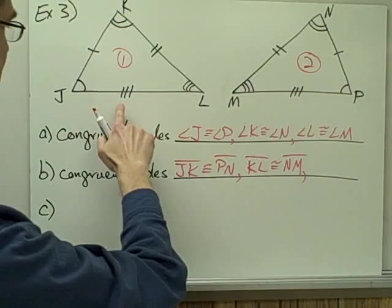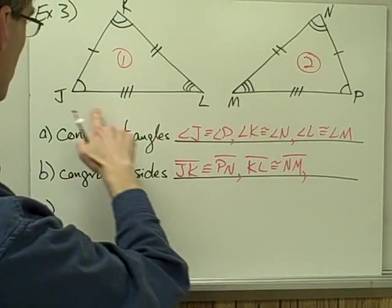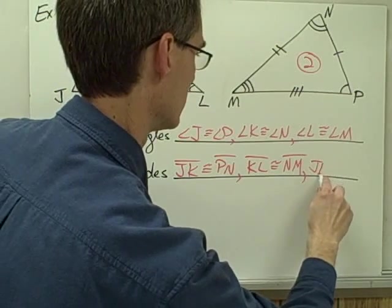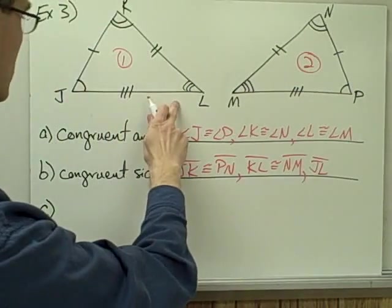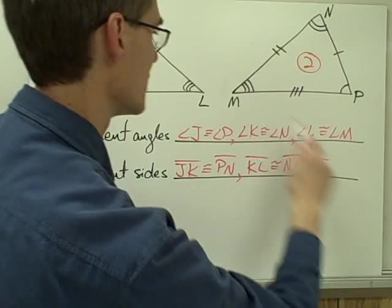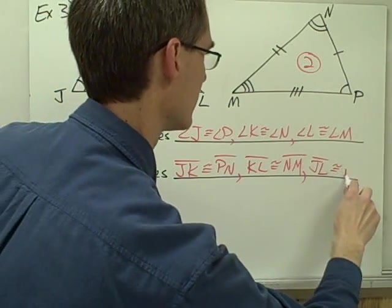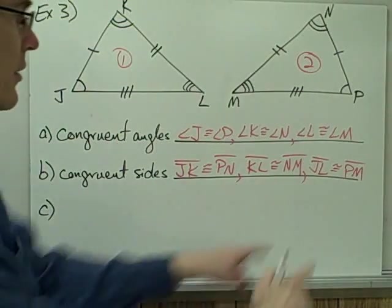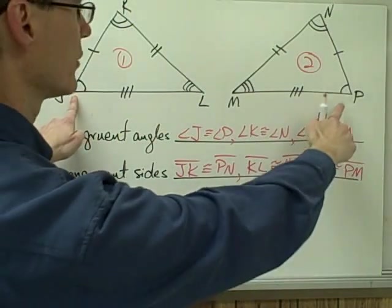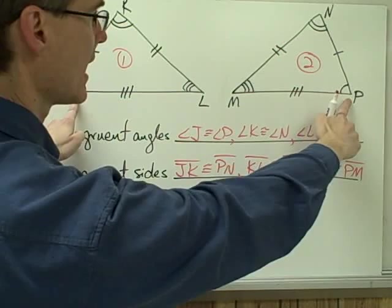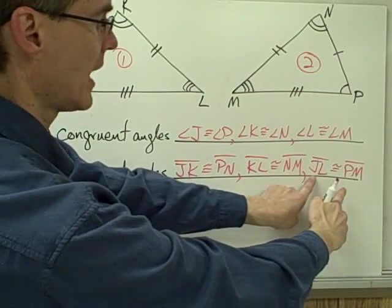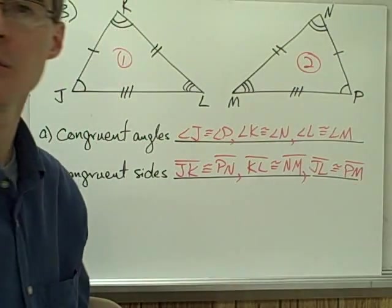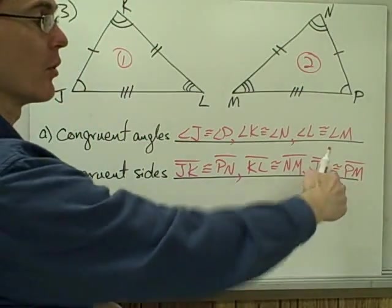And my last side with the three hash marks — segment JL is congruent to segment PM. Notice I wrote those in the order that their congruent angles are: since angle J and angle P are congruent, I've got J and P first, and then L and M second, when I write down the congruence statement for that segment.